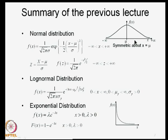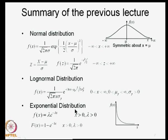Let us quickly recall what we did in the last lecture. We discussed the normal distribution, which is the most commonly used distribution, especially in optimization models, because it is rather easy to handle. However, we also use other distributions like log-normal, exponential, gamma, and so on.